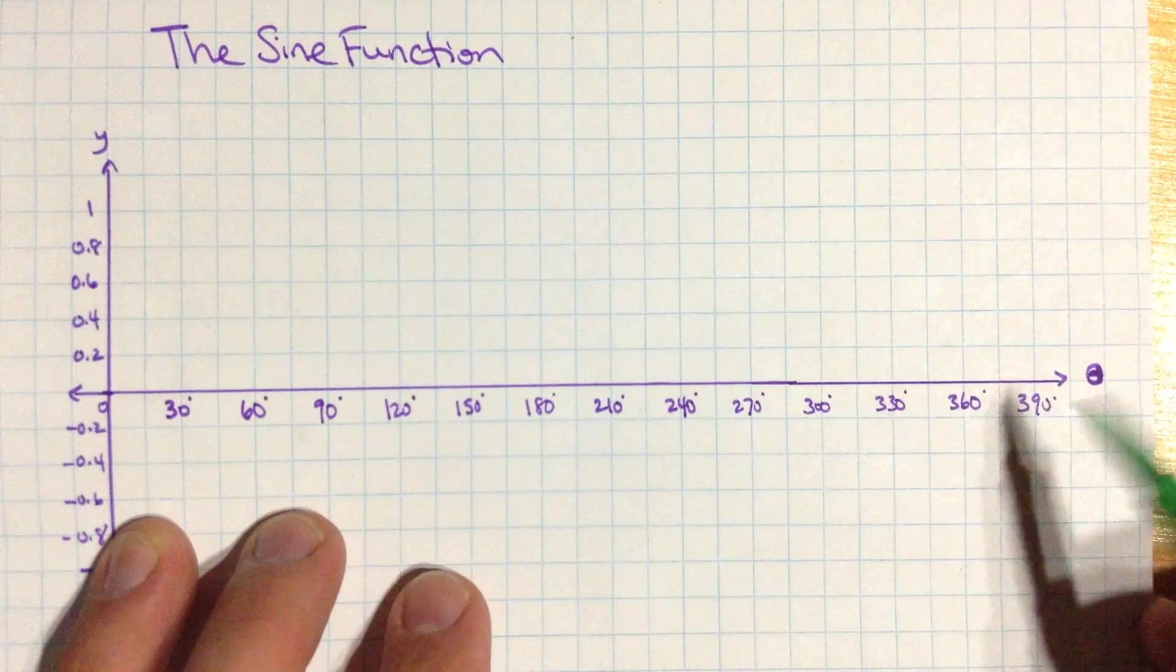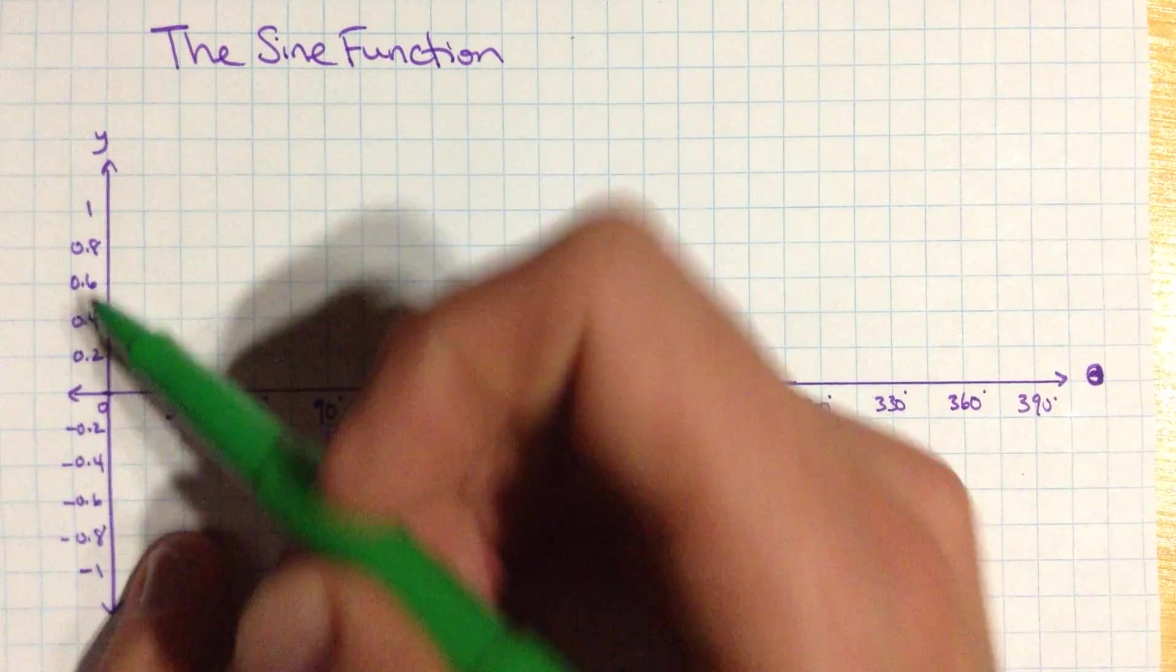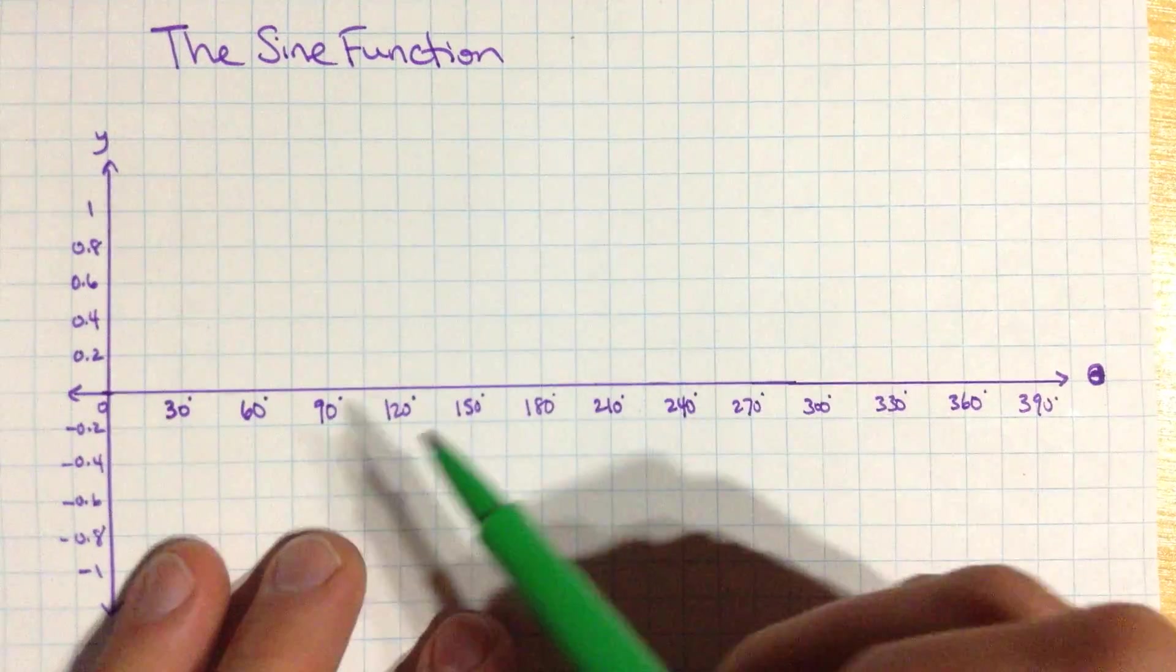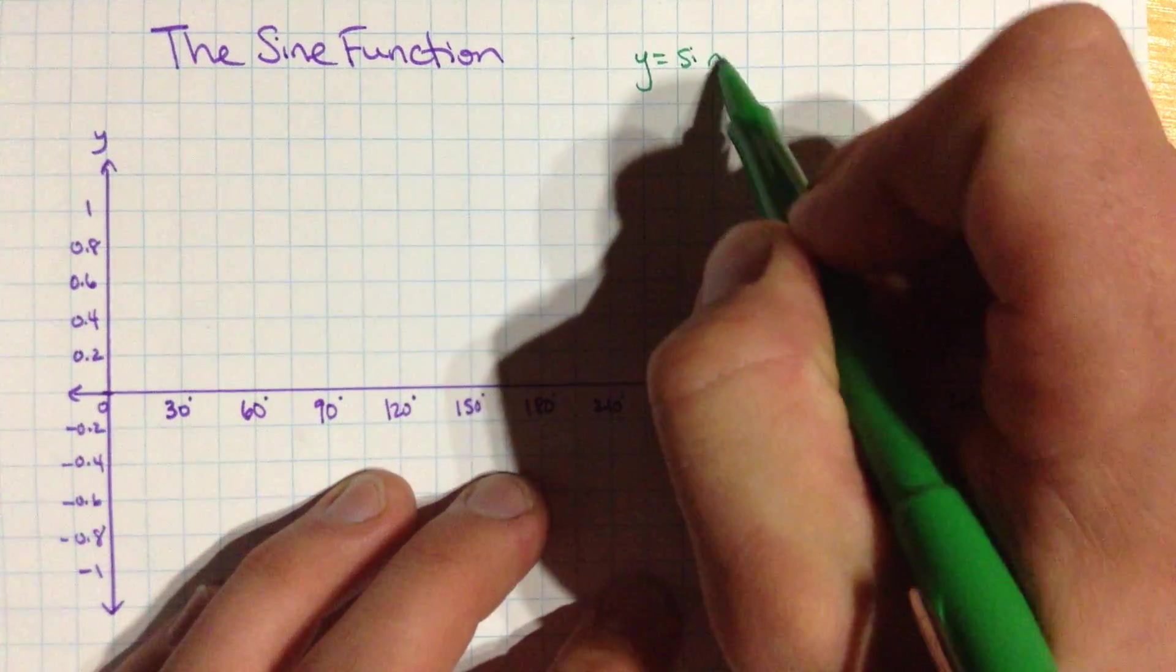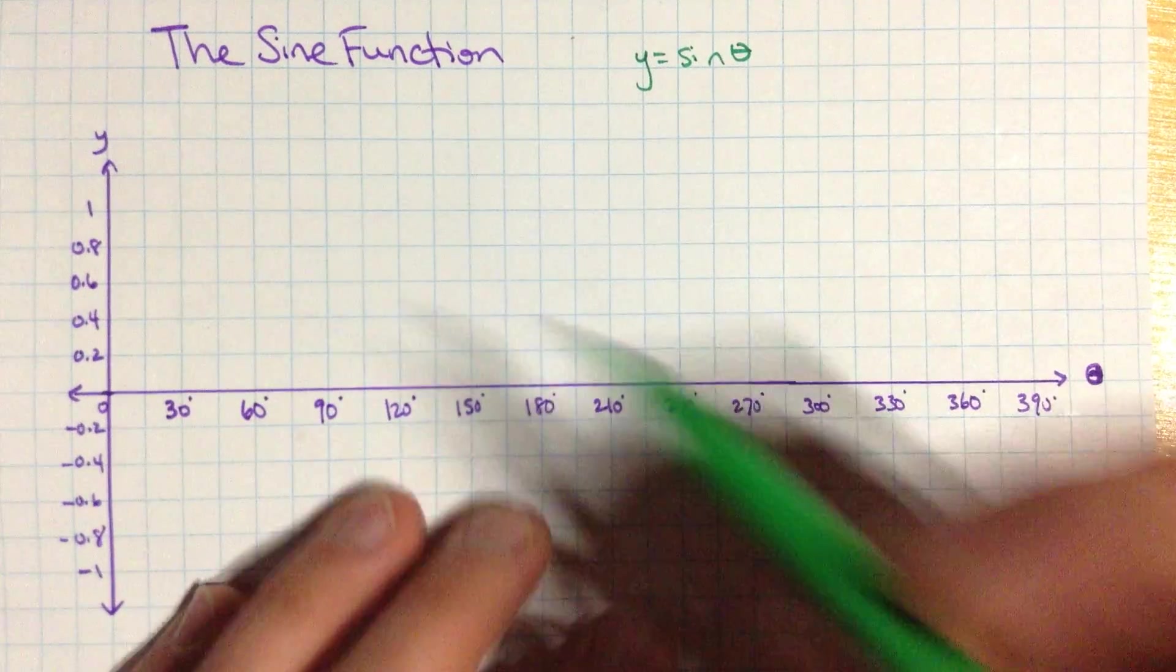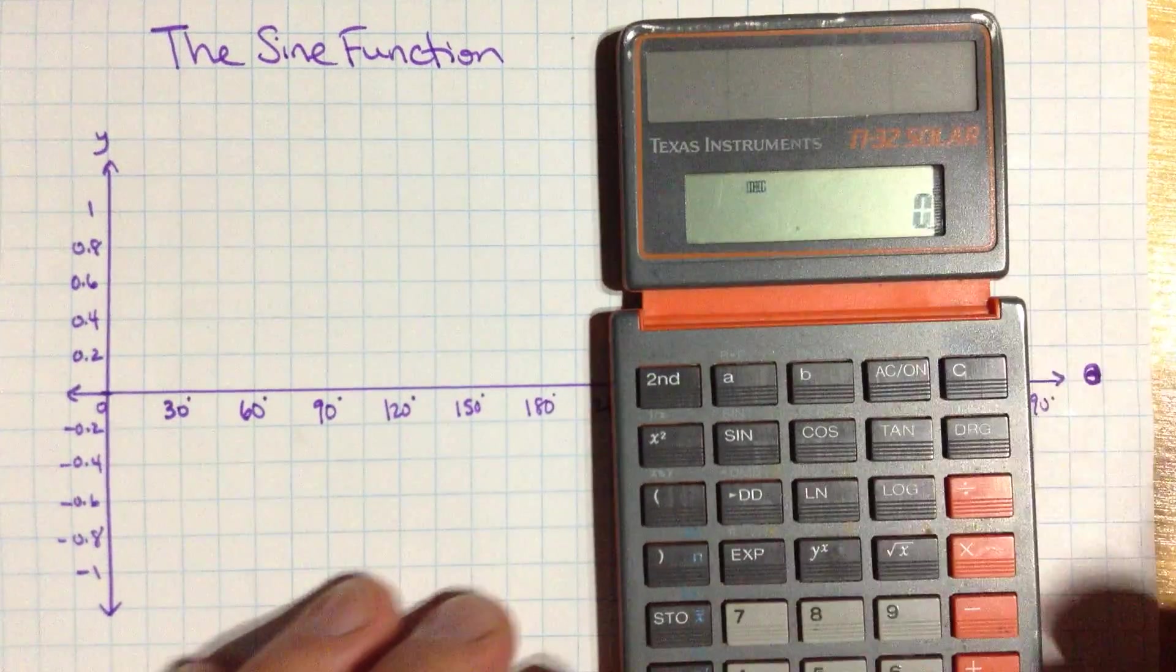We're going to make this axis the angle axis, in this case I'm going to call it theta, instead of the x-axis. And vertically here, this is still y. So we're graphing the function where y equals sine of theta. That's how we would write it. So we're going to draw this on here, and all we're going to do is really just plot a bunch of points and see how they connect.